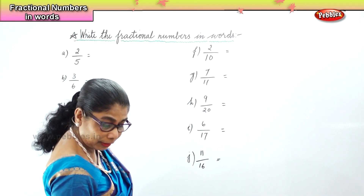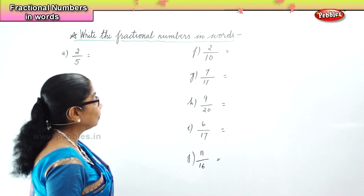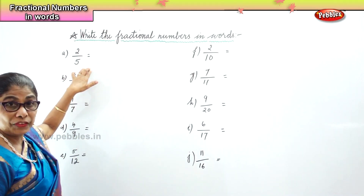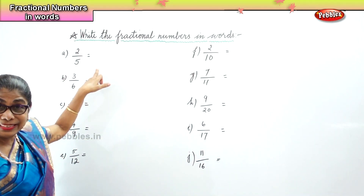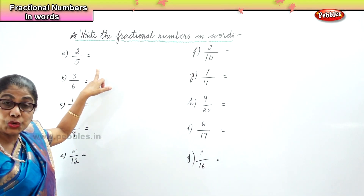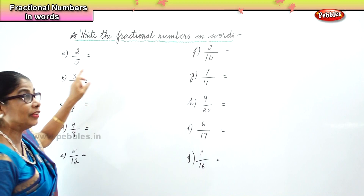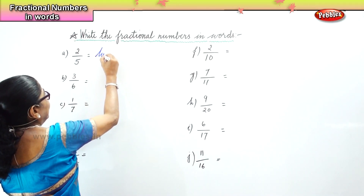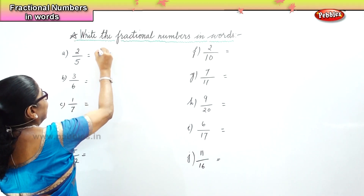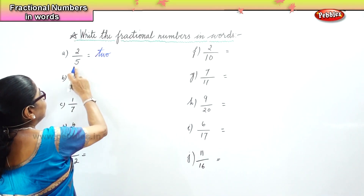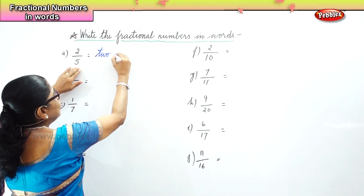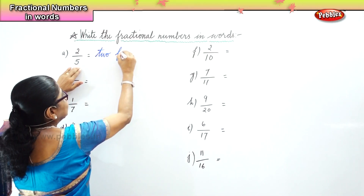Now let us look at 2 by 5. How will you write this? Two fifths — two parts out of five parts. Two fifths.